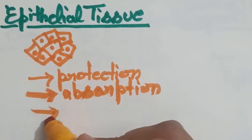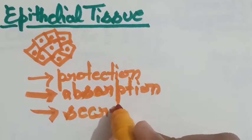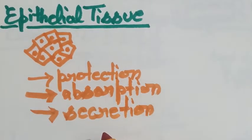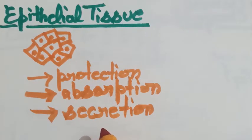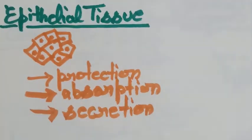And the third function is secretion. So they are also present in the internal lining of various organs, like salivary gland, thyroid gland, pancreas and liver and help in their secretion. Means these glands secrete various enzymes and the secretion of these enzymes is the function of epithelial tissue.